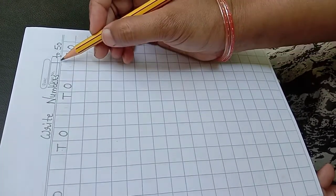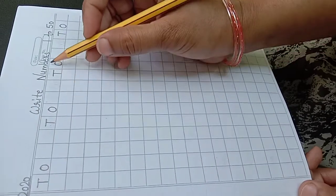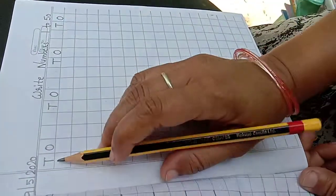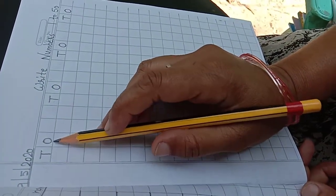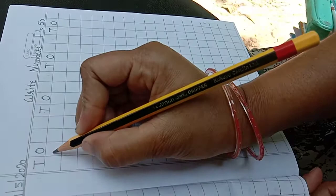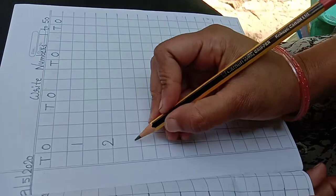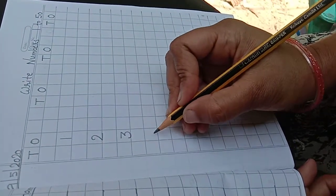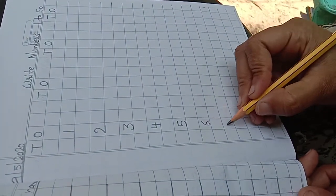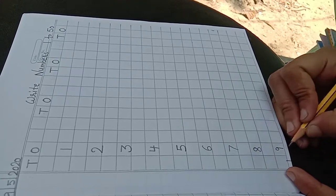Write numbers 1 to 50. T.O. - write 1, 2, leave one box 3, then again leave one box 4, then 5, then 6, then 7, yes, then 8, 9, then write 10.